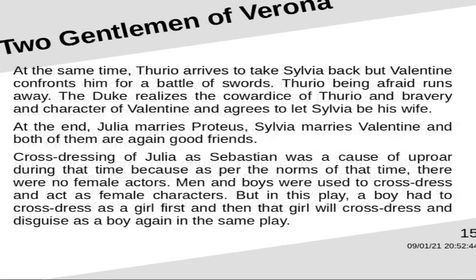At the same time, Thurio arrives to take Sylvia back but Valentin confronts him for a battle of swords. Thurio, being afraid, runs away. The Duke realizes the cowardice of Thurio and the bravery and character of Valentin, and agrees to let Sylvia be his wife. At the end, Julia marries Proteus, Sylvia marries Valentin, and both friends are again on good terms.